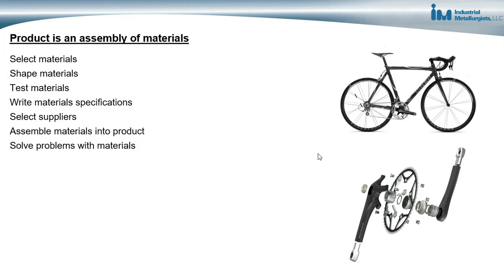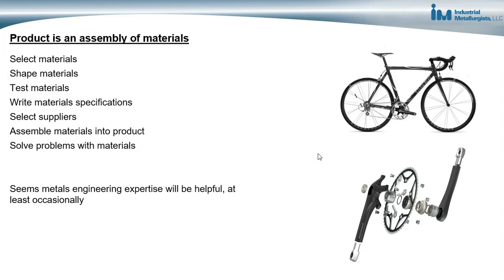We have to select the materials, shape them using fabrication processes, and test them to make sure they can withstand the use conditions. We need the right material specifications so that suppliers understand the requirements. We have to select capable suppliers that can continually provide materials and components that meet our requirements. Then we have to assemble the materials into a product using processes developed to ensure the materials are joined in a way that results in reliable joints and a reliable product.